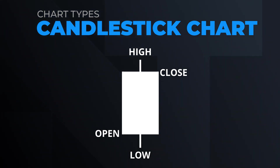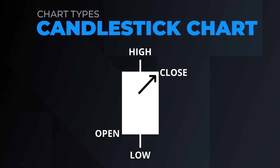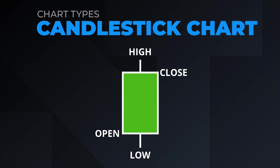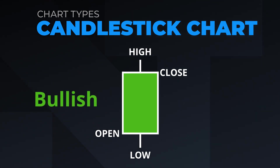The body is colored according to the relationship of the open and close. If the close is above the open, the body is green, typically considered a positive or bullish color.